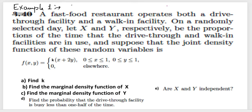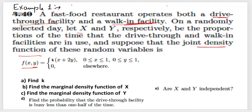Let's see the first example. A fast food restaurant operates both drive-thru and walk-in facilities. On a randomly selected day, let x and y be the proportion of time that the drive-thru and walk-in facilities are in use respectively, following a given joint density function f(x, y). The question has five parts: find k, find the marginal density functions, find a conditional probability, and determine if x and y are independent.